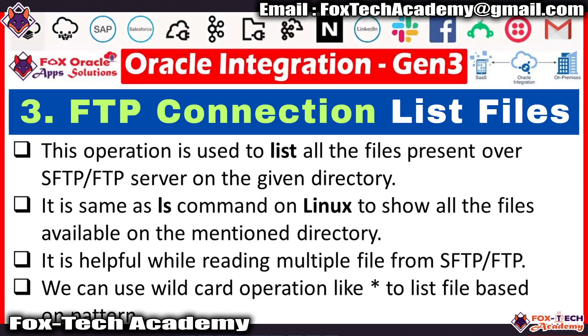Now we have the list file operation. This operation gives you a list of files present in a specific directory. It is helpful when we don't know the file name — for example, if we know a CSV file is present in a specific directory but don't know its name. The list file operation returns a list of file names, and with those names we can use the read file operation to get the file from the server. The list file operation also accepts wildcard operators so we can get all files of a specific type such as CSV, PDF, or text.